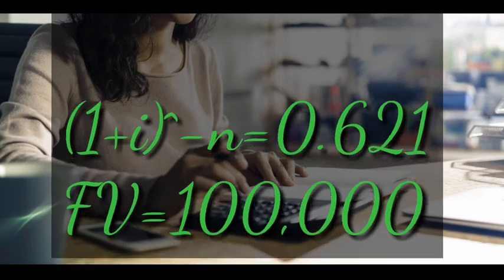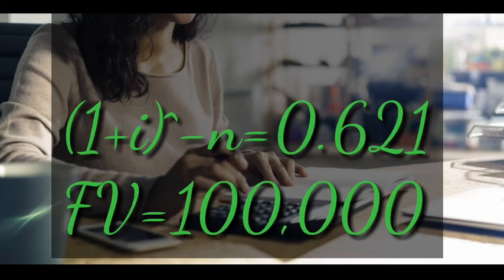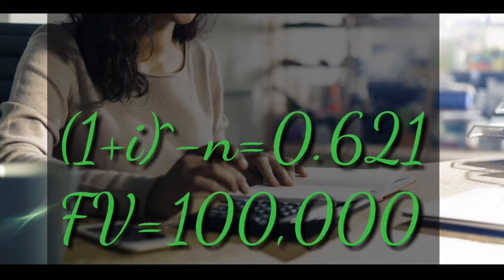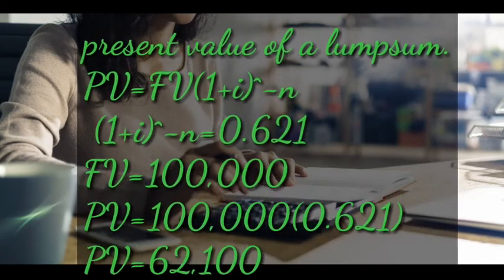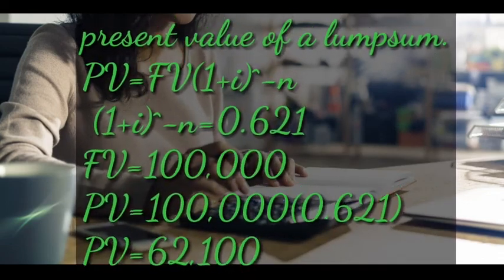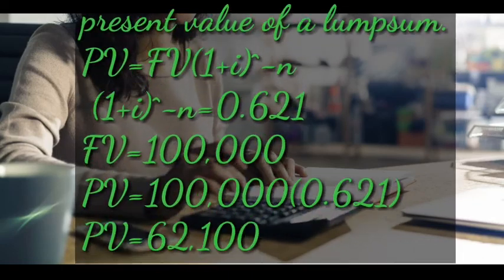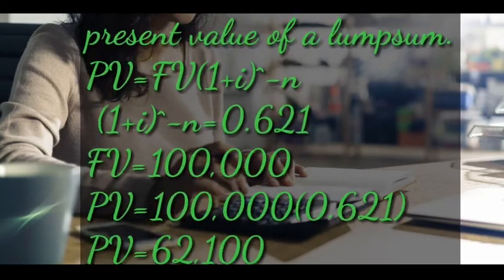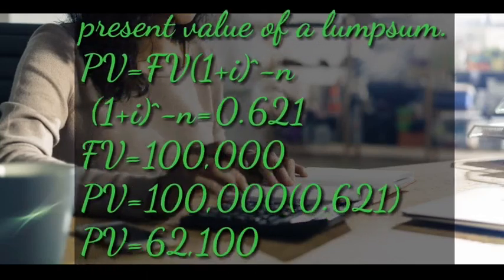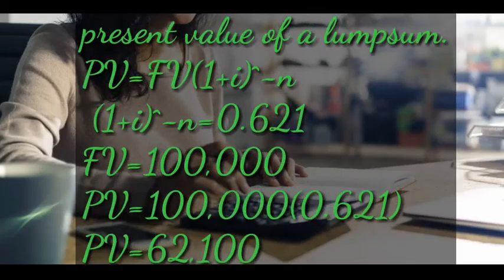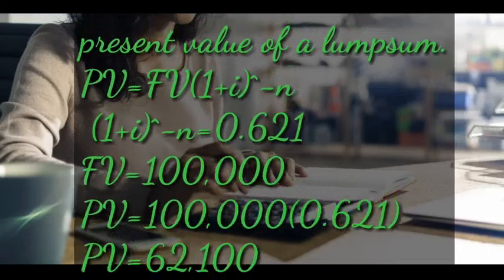From our table, the whole of (1 + i) to the power of negative n equals 0.621, and our future value was 100,000. In order to calculate the present value, we multiply 100,000 times 0.621 and we get 62,100. That is the present value of 100,000 five years from now.